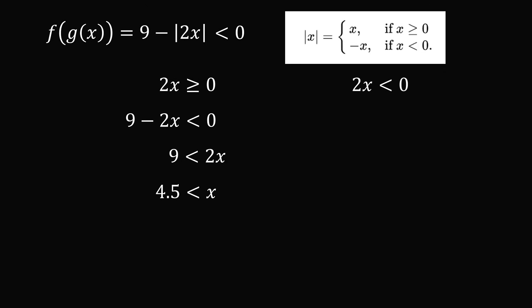Now let's suppose that 2x is less than 0. So when we have the absolute value of 2x we're going to add the opposite of 2x. So here we have 9 minus the opposite of 2x needs to be less than 0. The opposite of a negative will be a positive so 9 plus 2x is less than 0. Subtract 9 from both sides of the equation and then divide by 2 to get that x is less than negative 4.5.